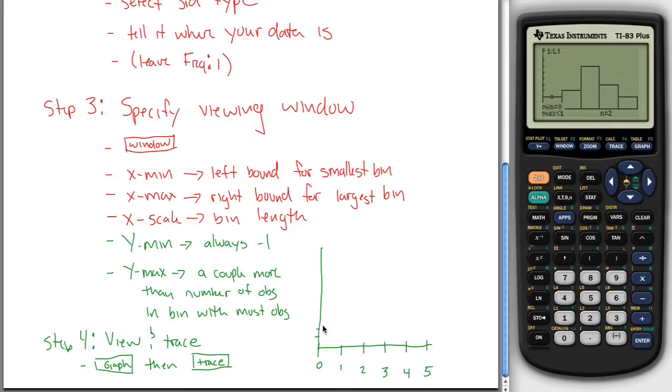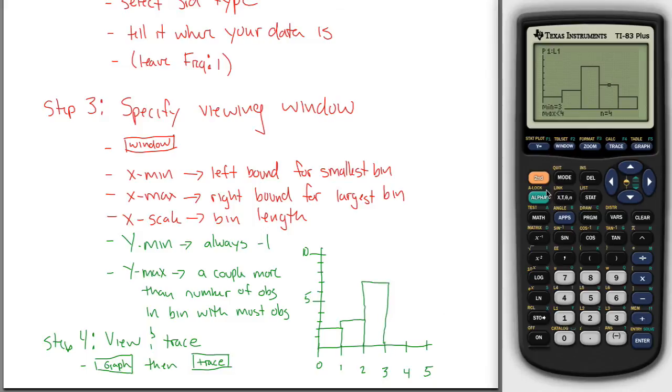So if I wanted to draw a histogram here, I had two in this first one. And then you scroll over and it says between 1 and 2, you had three observations. Between 2 and 3, you had seven observations, and so on. 3 and 4, you had four.